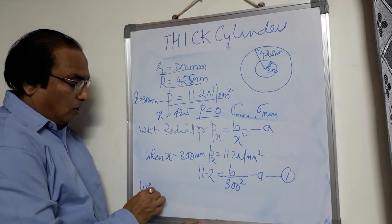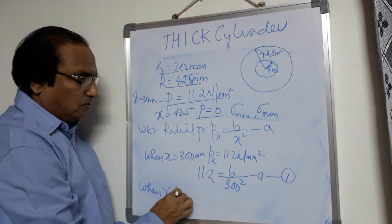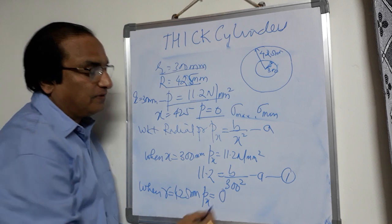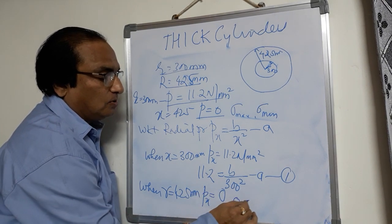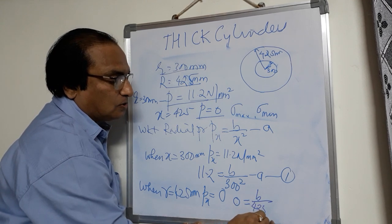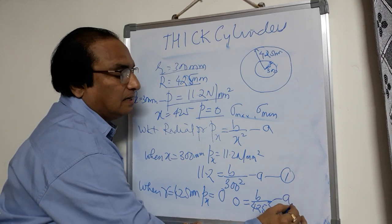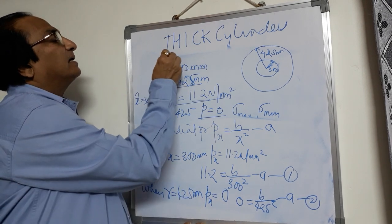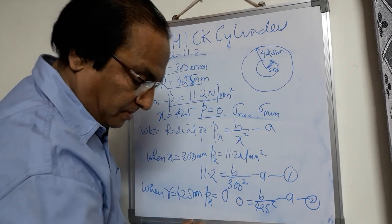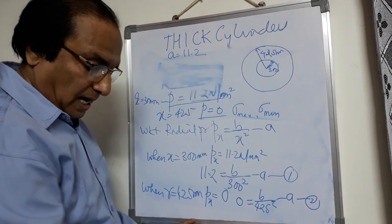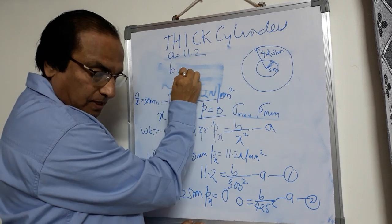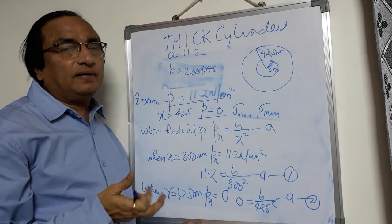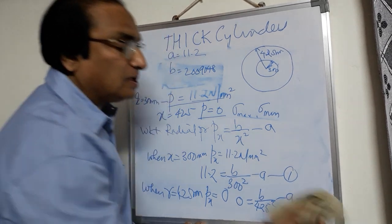So you have got two equations and two unknowns. Solving for A and B, you get A = 11.2 and B = 200,9048 approximately. Once you find out A and B, you can solve for hoop stress. Using the formula given by Lamy for hoop stress: sigma X = B/X² + A = 200,9048/X² + 11.2.